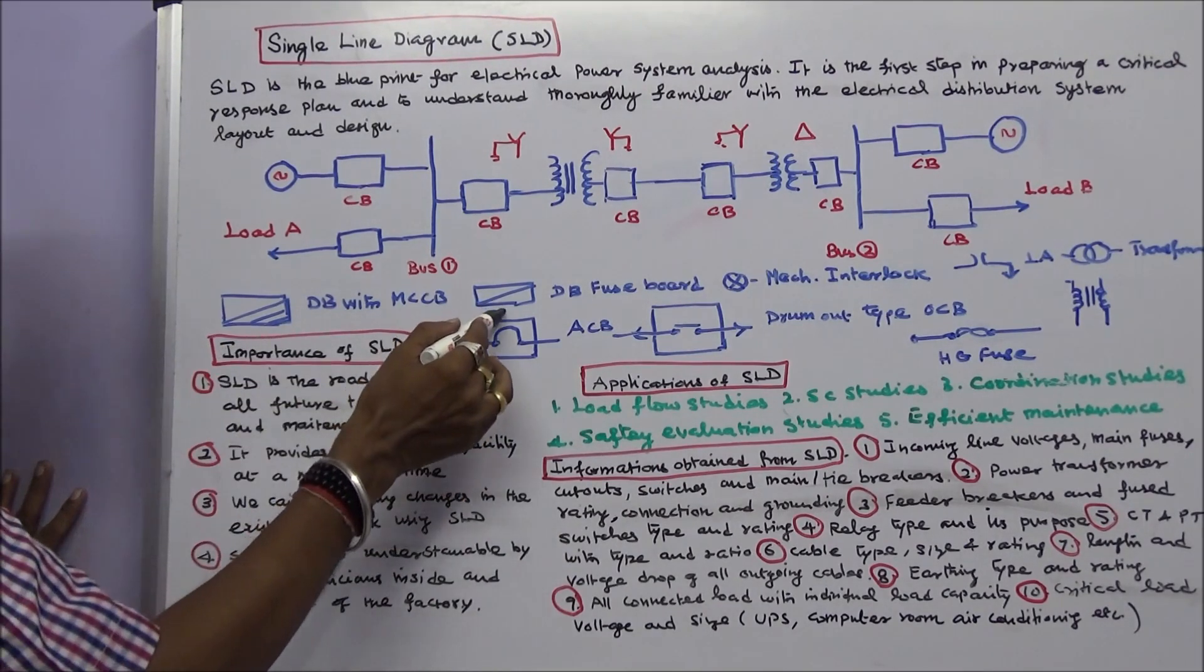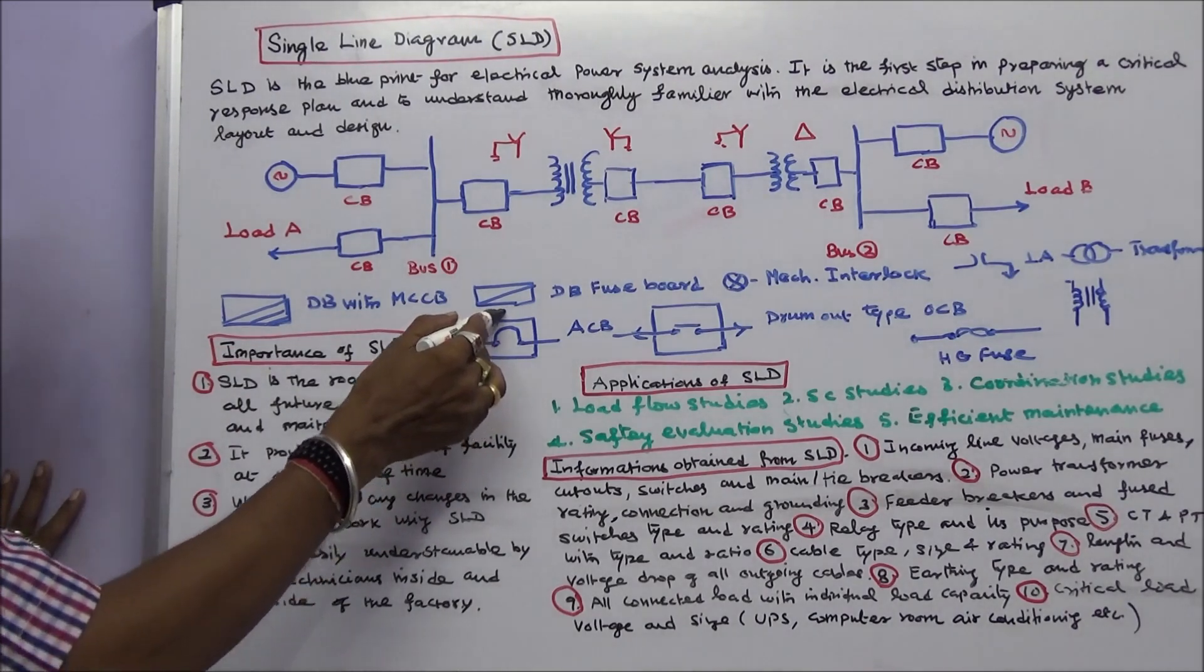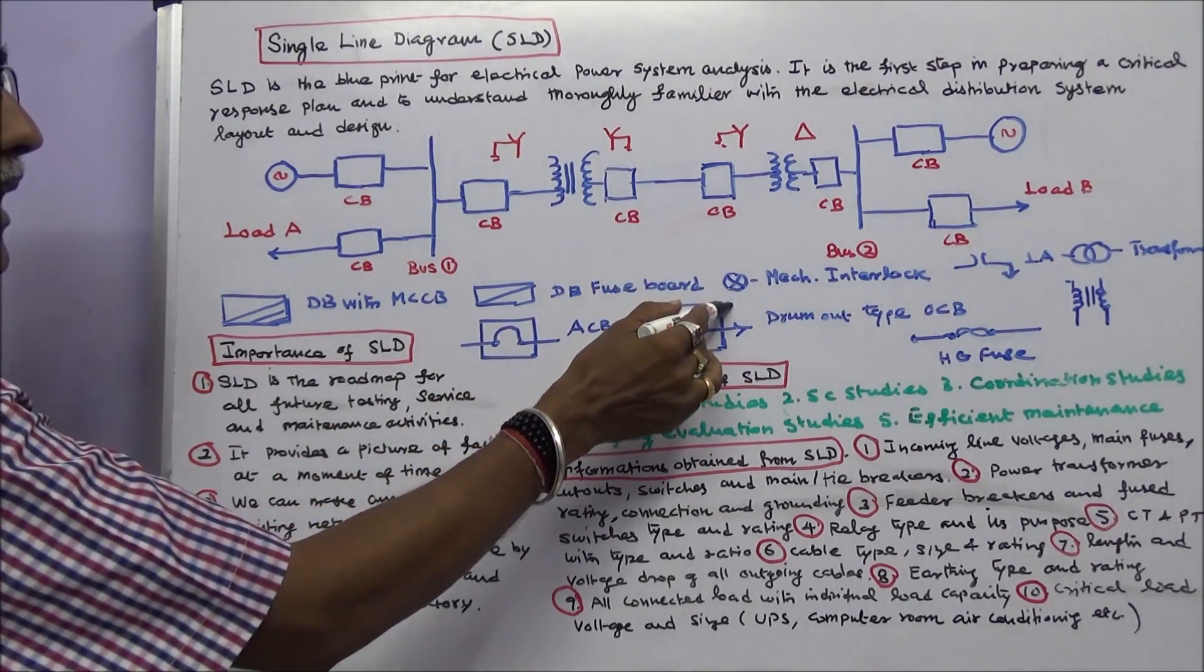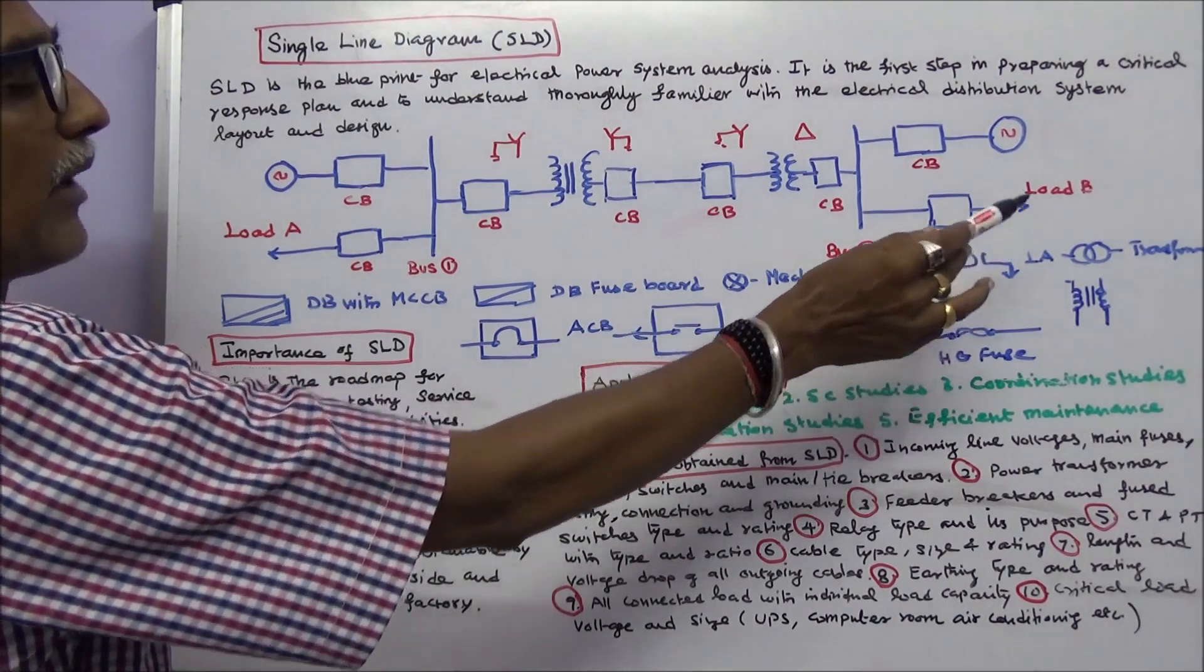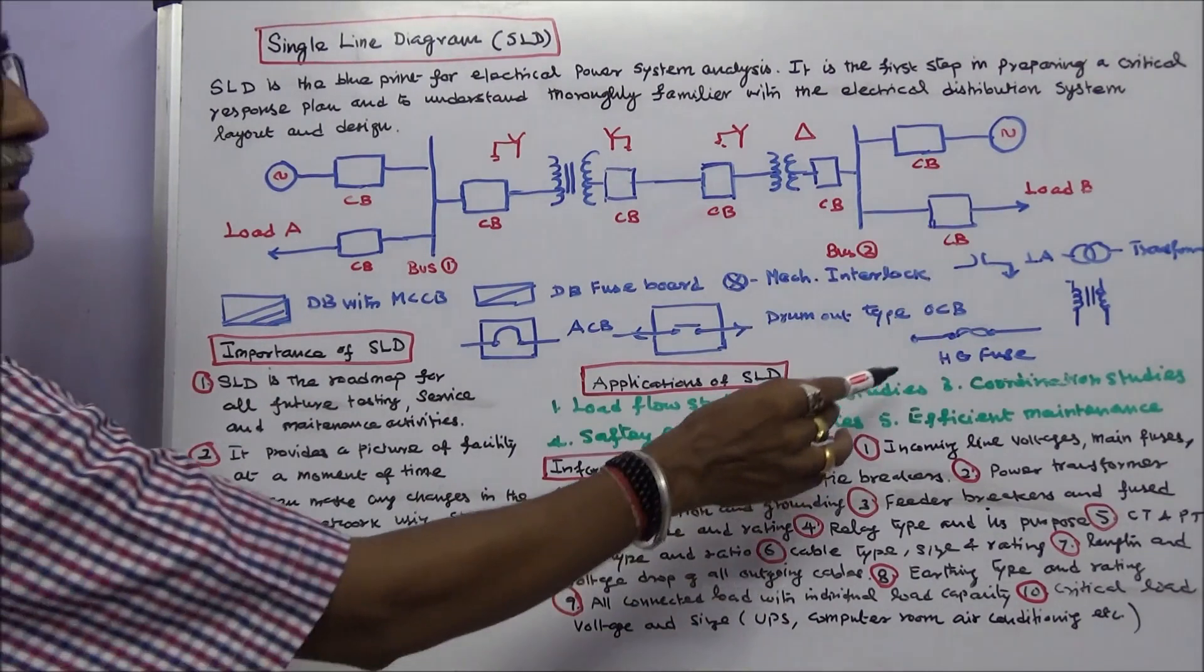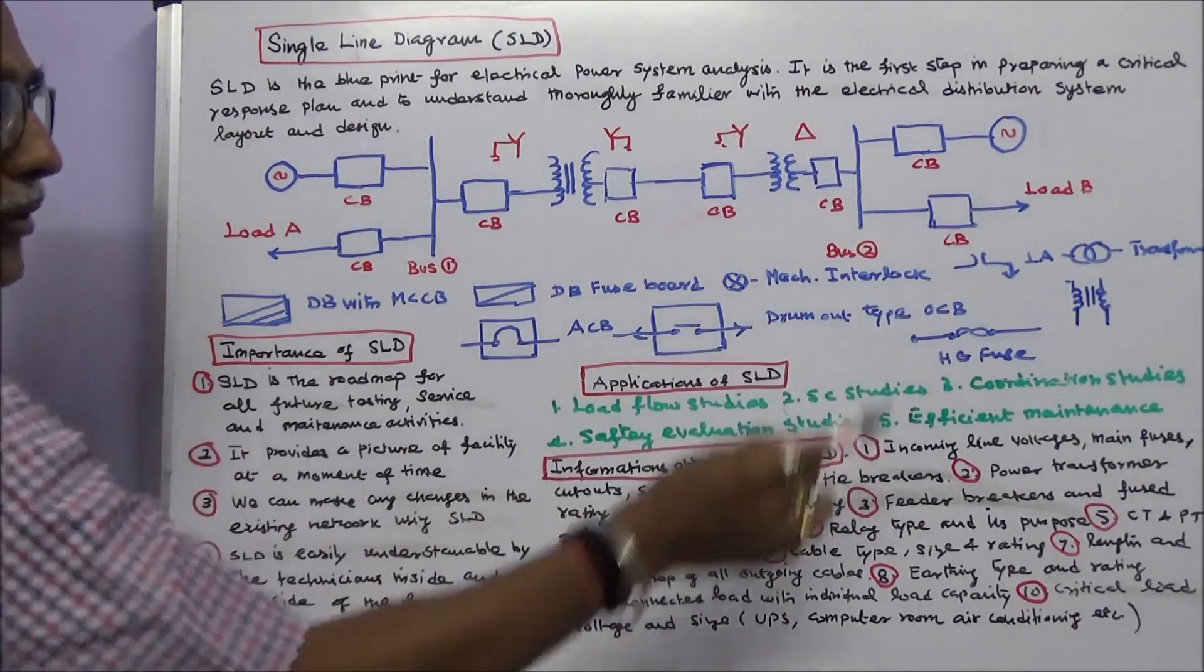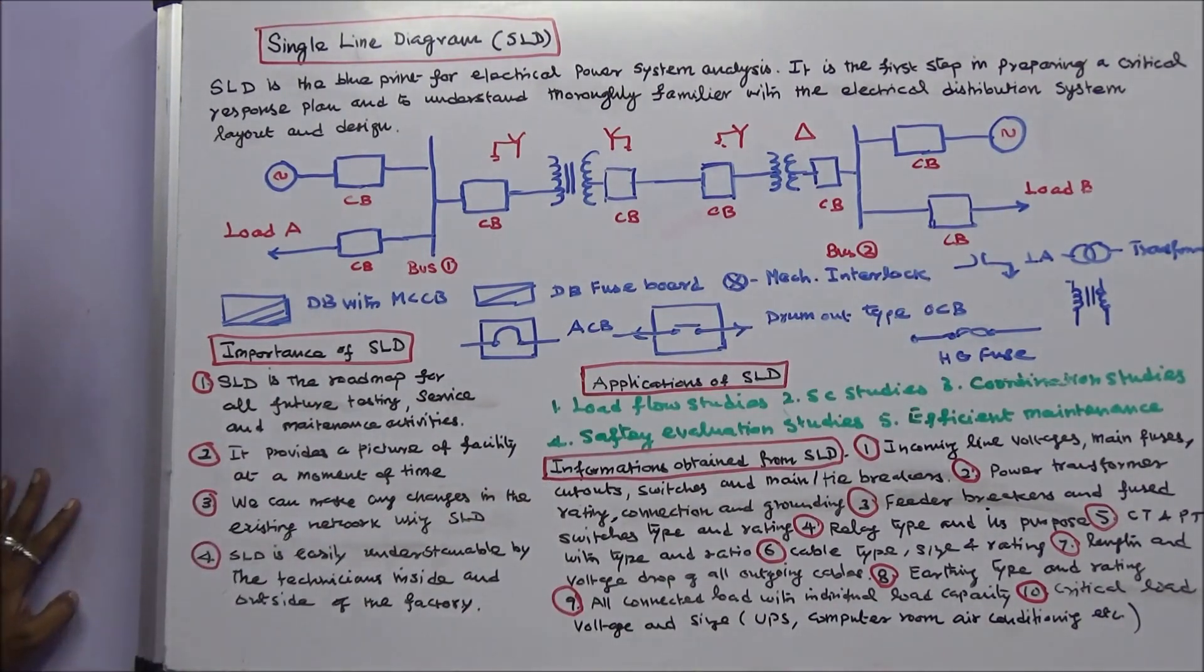This is a symbol of distribution fuse board, mechanical interlock, lightning arrester, transformer, and horn gap fuse. The list of electrical symbols and many single line diagrams are available on the net. Please go through it.